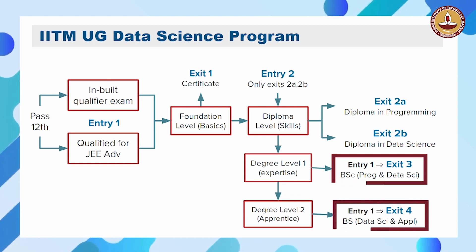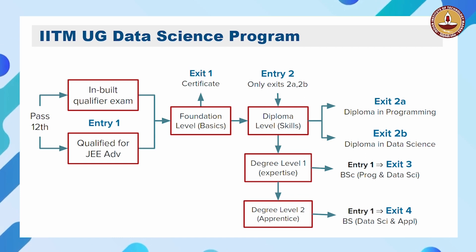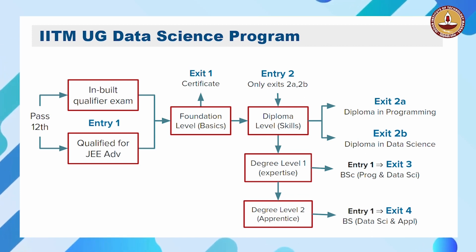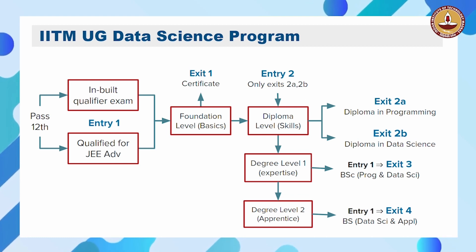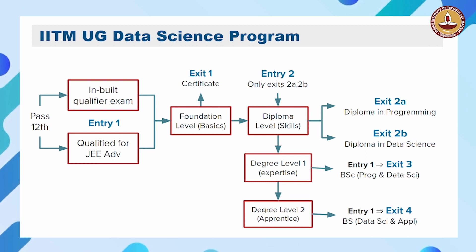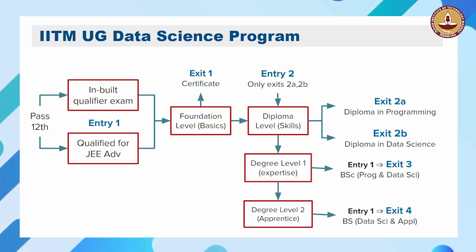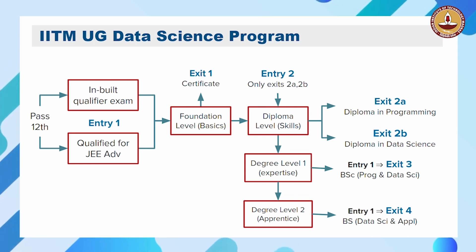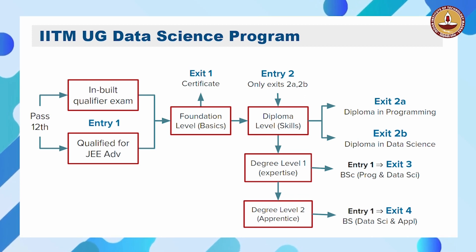The BSc is equivalent to a three-year degree, and the B.S. is equivalent to a four-year degree. This is the overall structure of the program. For the BSc and B.S., we really advise that you come through entry 1, which is the main entry. If you come through entry 2, it is preferable that you exit with a diploma.